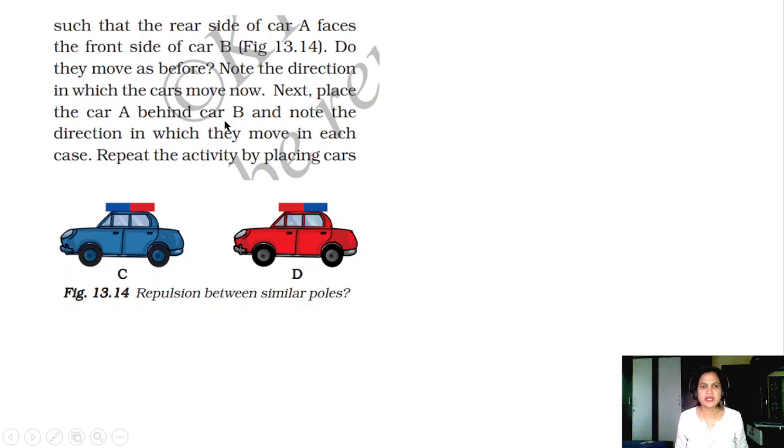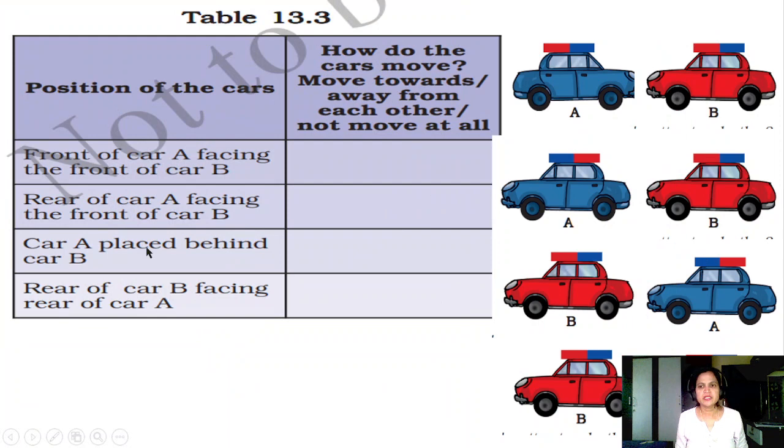Next, place car A behind car B and note the direction in which they move. In each case, repeat the activity by placing the cars. See here, this is car A and this is car B. The position of the cars: how do cars move? Move towards, away from each other, or not move at all. Front of car A is facing the front of car B like this. Here it is opposite poles. Opposite poles attract each other. They move towards each other.